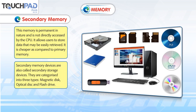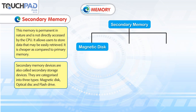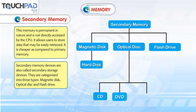The three types of secondary memory are magnetic disk, optical disk, and flash drive. Examples of magnetic disk include hard disk. Examples of optical disk are CD, DVD, and Blu-ray disk.